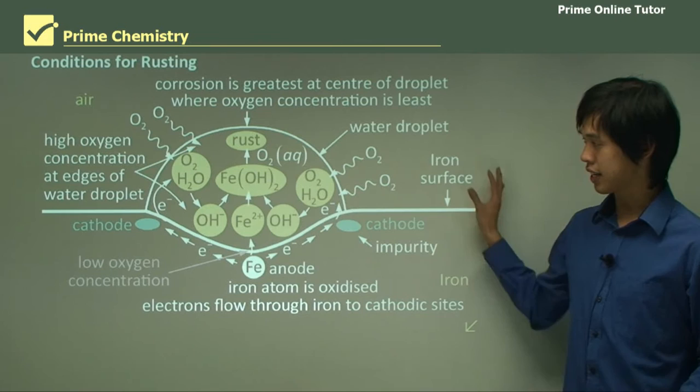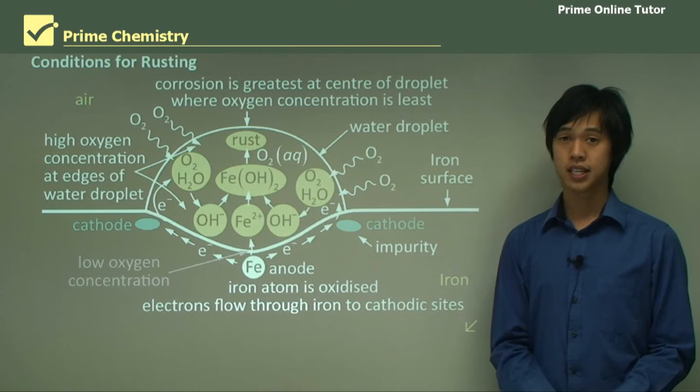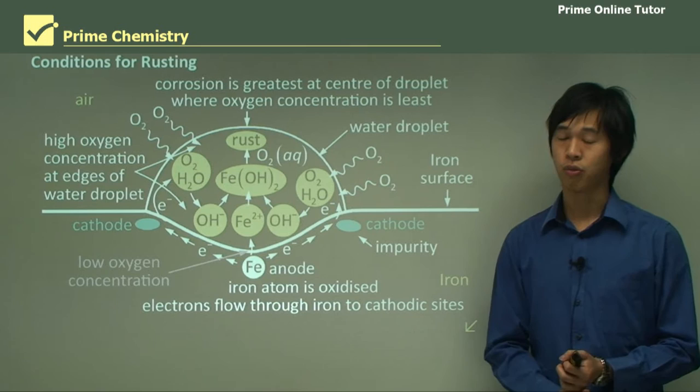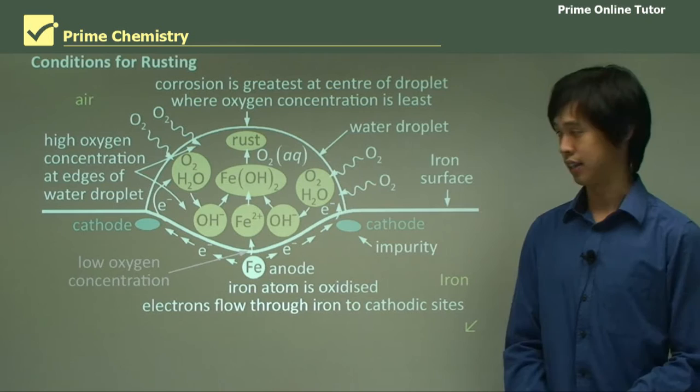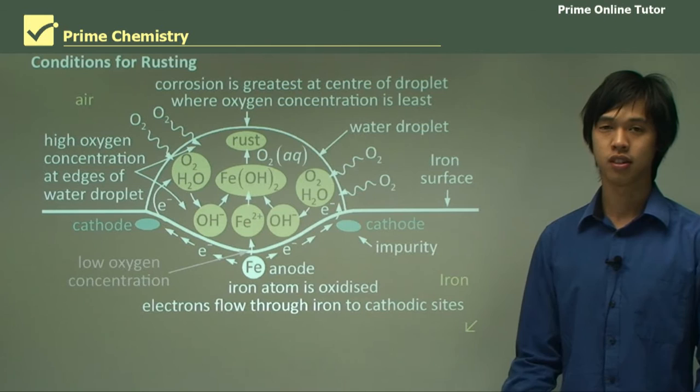That concludes today's lesson on the rusting mechanism of iron. We looked at what conditions are required for rust, what the mechanism and chemical reactions involved are, and how it actually looks if we demonstrate it diagrammatically. We'll move on to the question segment now, and see if we can use all this information to answer some questions.